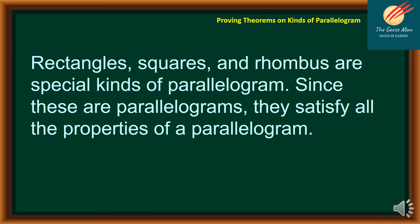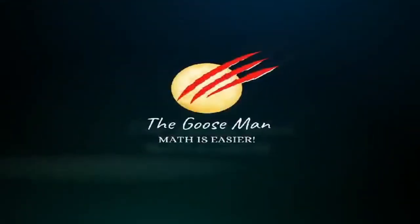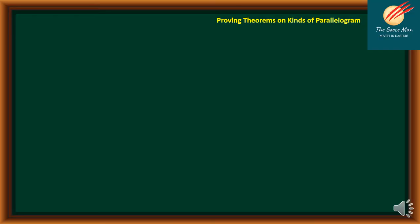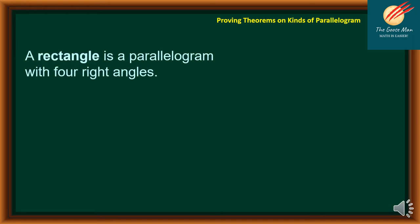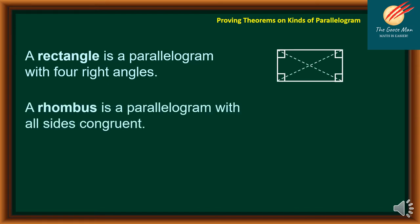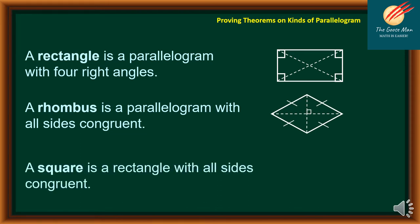Take note that rectangles, squares, and rhombuses are special kinds of parallelogram. Since these are all parallelograms, they satisfy all the properties of a parallelogram. A rectangle is a parallelogram with 4 right angles. A rhombus is a parallelogram with all sides congruent. A square is a rectangle with all sides congruent, so it satisfies the conditions for both rectangle and rhombus — meaning it has 4 right angles and 4 congruent sides.